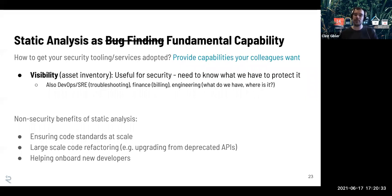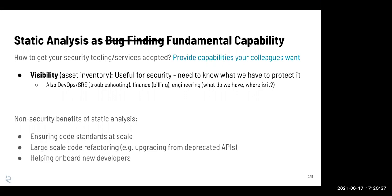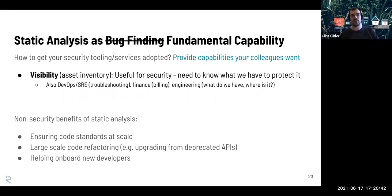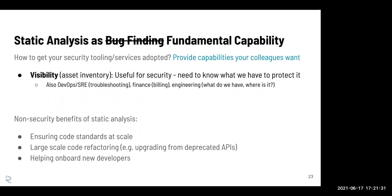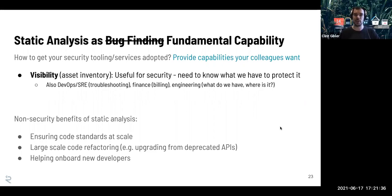I'd encourage you to think about what's useful for you and what's useful for other people. If you invest in source code analysis capabilities, some non-security benefits could include: for a VP of Engineering or CTO, how do we have consistent coding standards at scale and keep code quality high everywhere? For large-scale code refactoring — automatically upgrading from one API to a new one — that could be very valuable. And helping onboard new developers by saying: here's the way we call this specific API. All these things are generally useful for engineering. If you say 'I brought in tools that give you security benefits but also accomplish your goals,' you're really trying to be a partner to engineering teams.